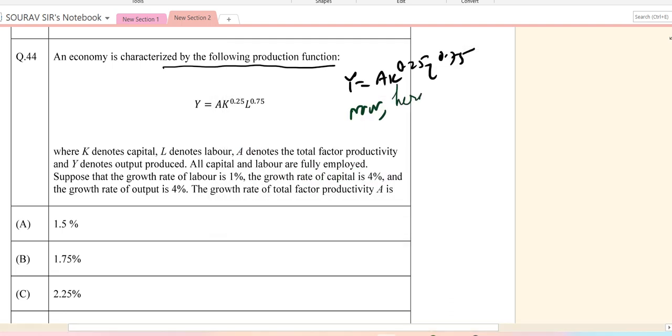If we take log on both sides, log of Y equals log A plus 0.75 log L plus 0.25 log K. So 1 by Y, if we differentiate, del Y equals del A by A plus 0.75 del L by L plus 0.25 del K by K.